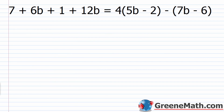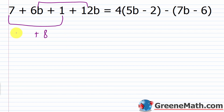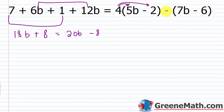Next problem: 7 plus 6B plus 1 plus 12B equals 4 times the quantity 5B minus 2, minus the quantity 7B minus 6. On the left, combining like terms: 7 plus 1 is 8, and 6B plus 12B is 18B. On the right, distributing: 4 times 5B is 20B, minus 4 times 2 is minus 8. Then treating the subtraction as multiplying by negative 1: negative 1 times 7B is minus 7B, and negative 1 times negative 6 is plus 6. Combining on the right: 20B minus 7B is 13B, and negative 8 plus 6 is negative 2.